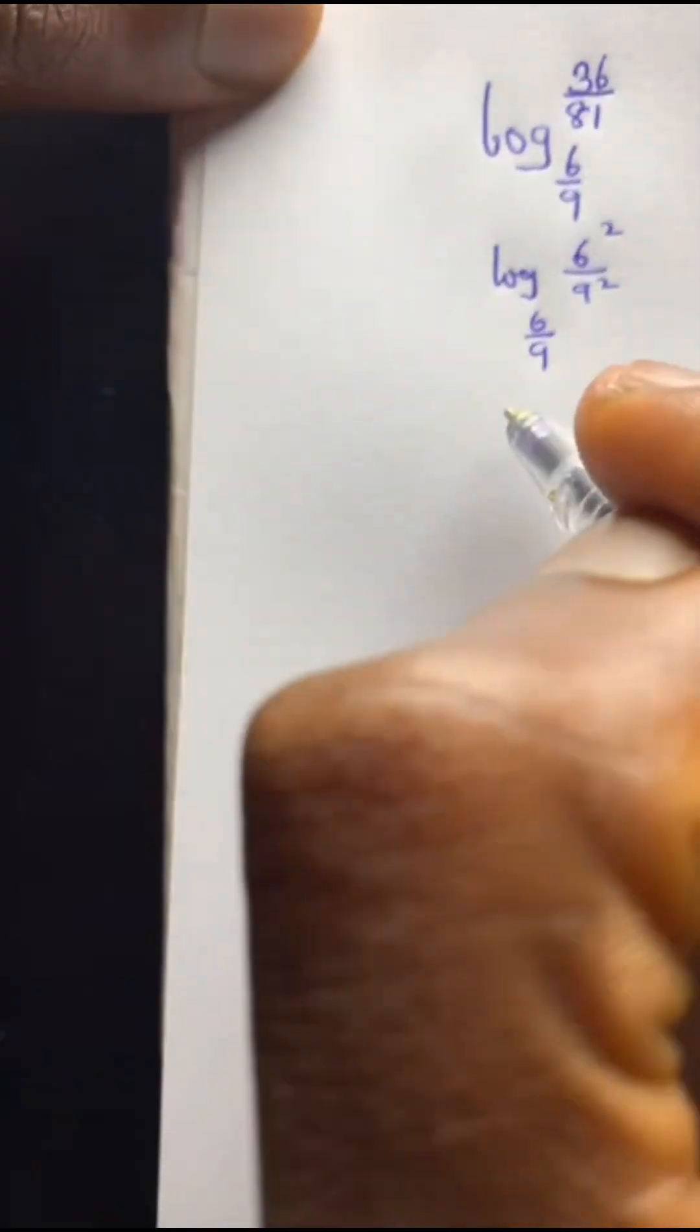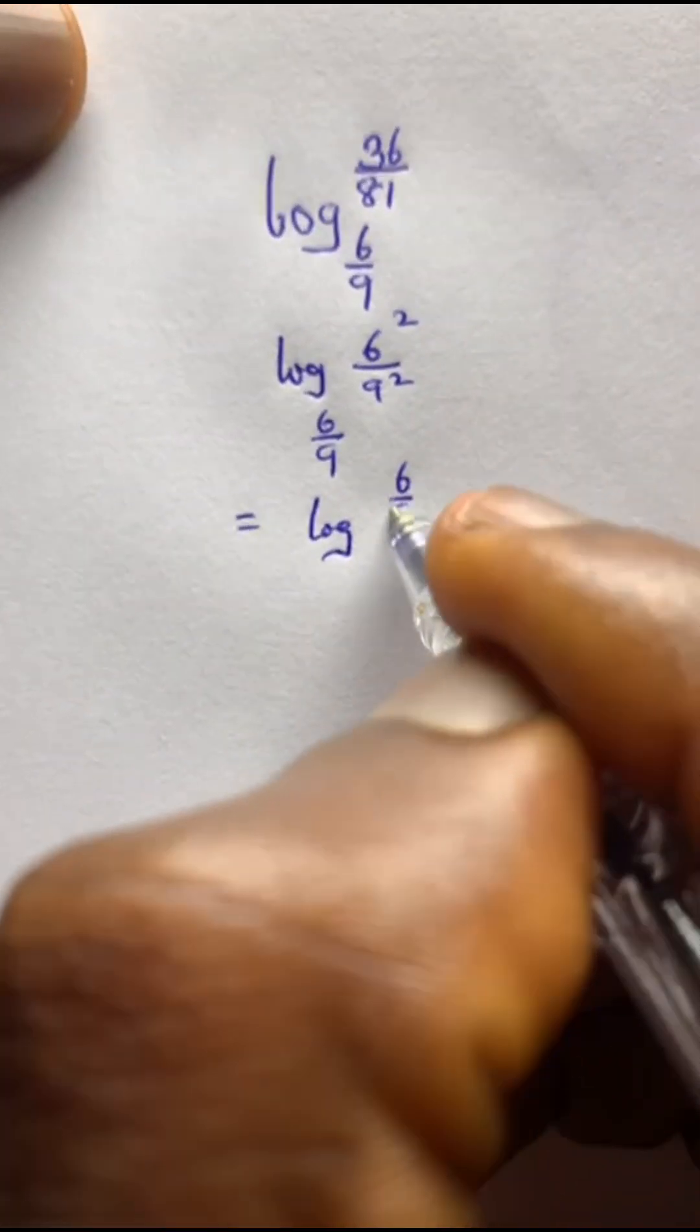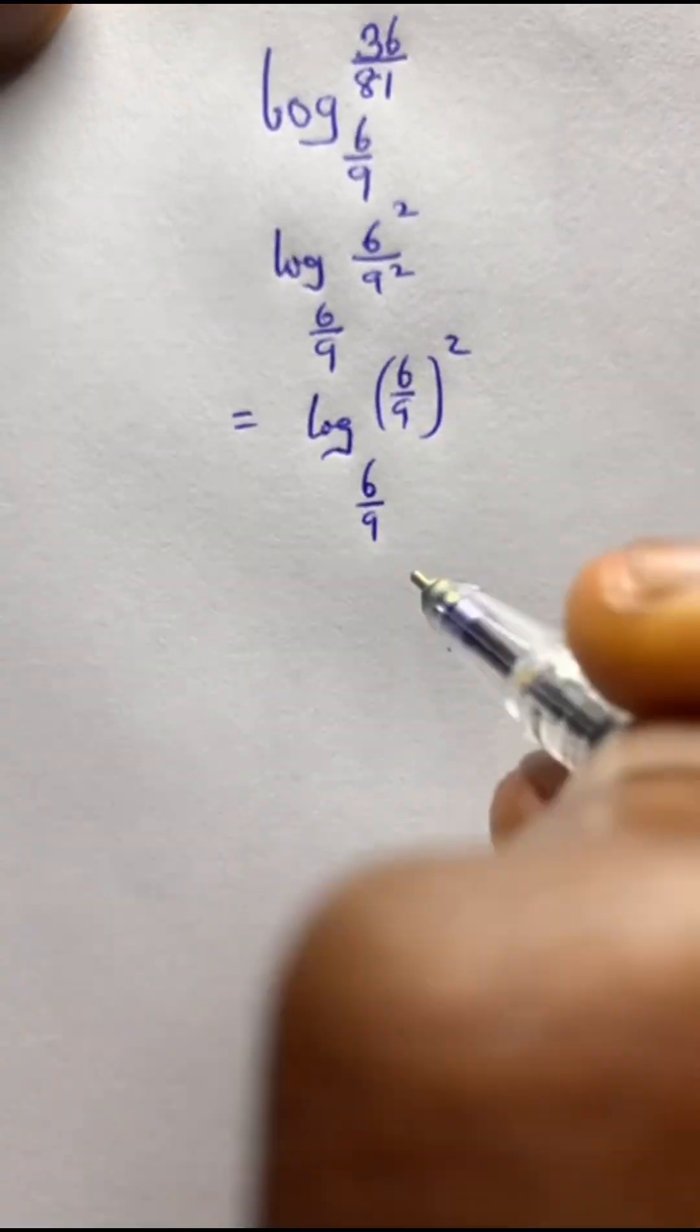Now what you do, this is equal to log of - since they have the same power, that would be 6 over 9 to the power of 2 to the base of 6 over 9.